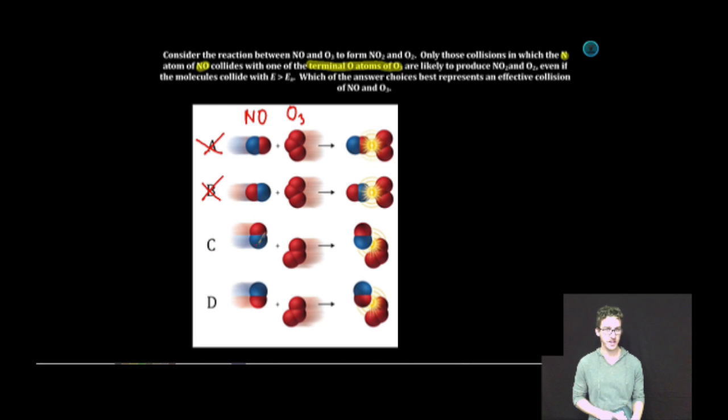Answer C. Nitrogen of NO collides with terminal atom of ozone. Collision occurs, we form NO2 and oxygen. This one's looking golden.